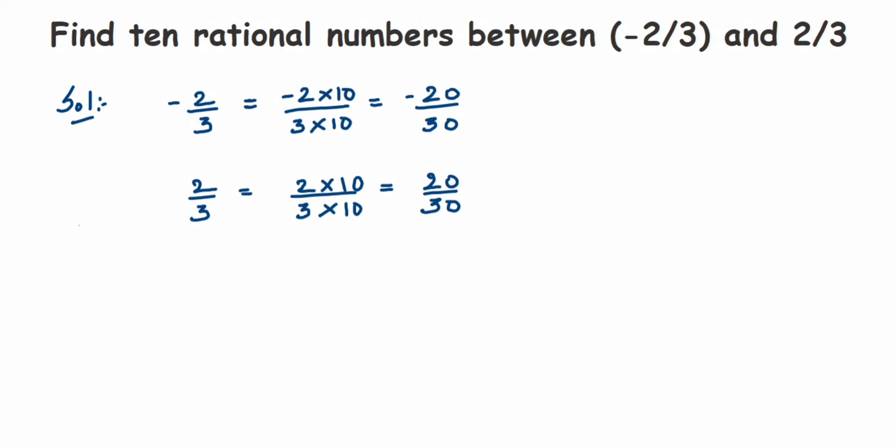I have written equal to, which means minus 2 by 3 is equivalent to minus 20 by 30. When you cancel the zeros you come back to the same original number. So instead of writing minus 2 by 3, I am going to write minus 20 by 30, same with 2 by 3.